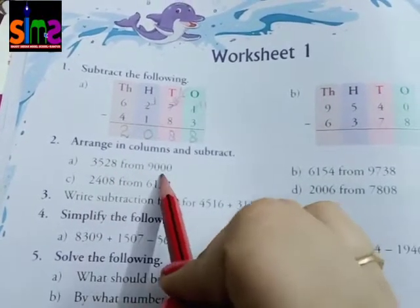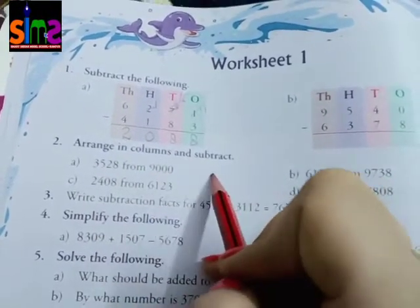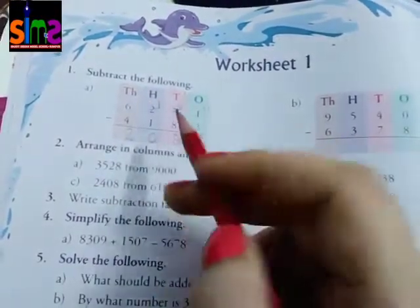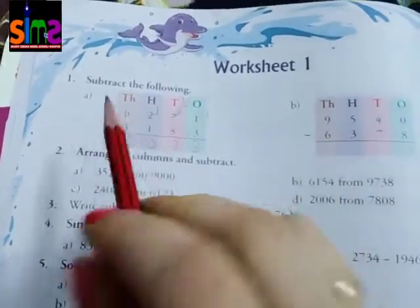For example, 3,528 from 9,000. The word 'from' means the base digits have to be written above and the first number below. You will have to subtract this. Don't forget to write place values: ones, tens, hundreds, thousands.